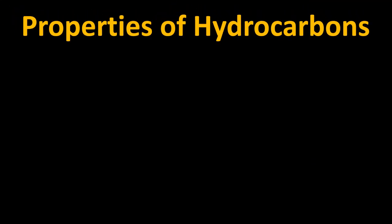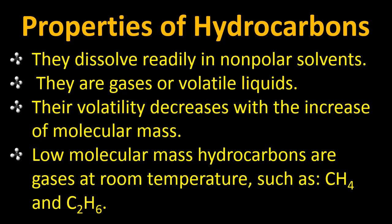Some basic properties of hydrocarbons to remember before starting the chapter: they dissolve readily in non-polar solvents since they are themselves non-polar. They are gases or volatile liquids, and their volatility decreases with the increase of molecular mass. As the number of carbon atoms increases, we get longer and longer chains of hydrocarbons due to the catenation property.